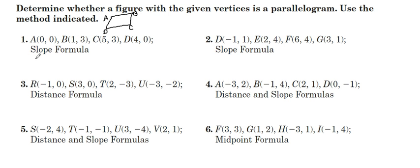So we need to find the slope of all four sides. We need side AB, BC, CD, and also AD. And if opposite sides are parallel, and both pairs of opposite sides are parallel, then we can prove that this is a parallelogram. So I'm going to use the slope formula, Y2 minus Y1 over X2 minus X1. Basically the difference of the Y's: 3 minus 0 is 3, 1 minus 0 is 1. So side AB has a slope of 3 over 1. BC, 3 minus 3 is 0, 5 minus 1 is 4. So this has a slope of 0 over 4.